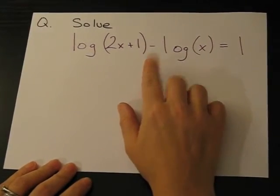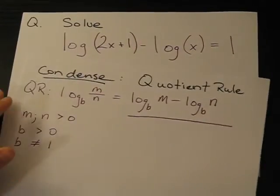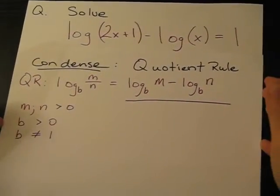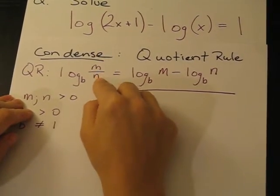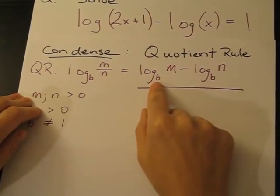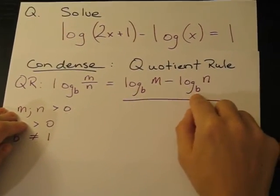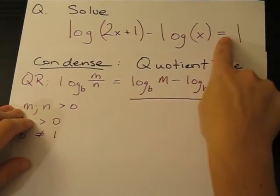So the first thing we're going to do is condense this equation, and to condense it, we'll use the quotient rule. The quotient rule is log_b(m/n) = log_b(m) - log_b(n). And if you'll notice, this form is exactly the form that we already have.